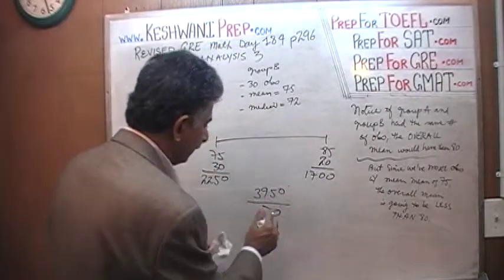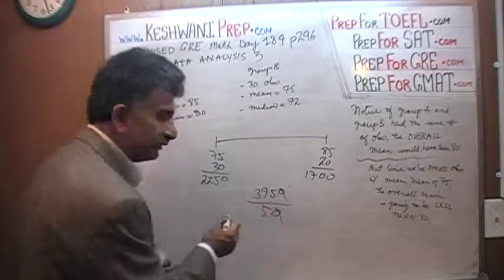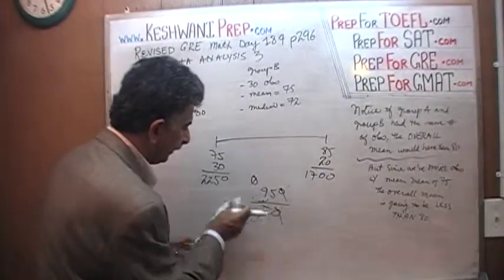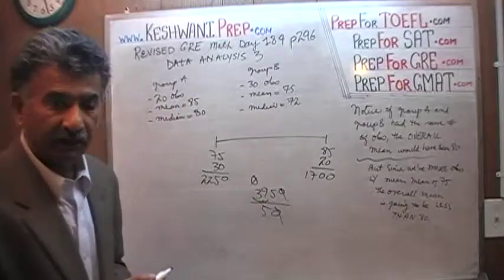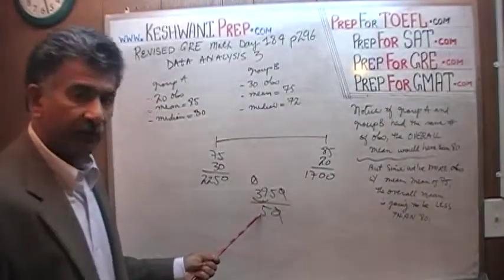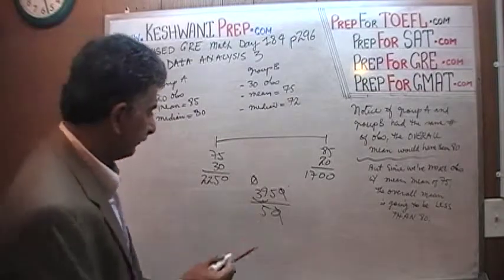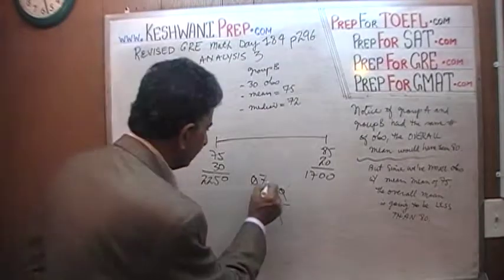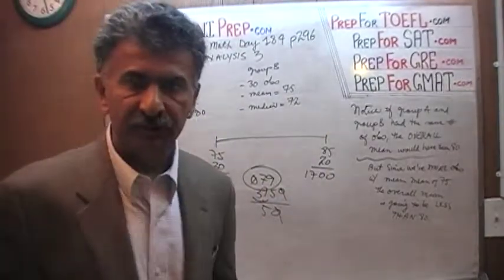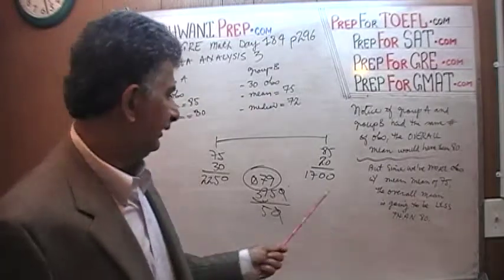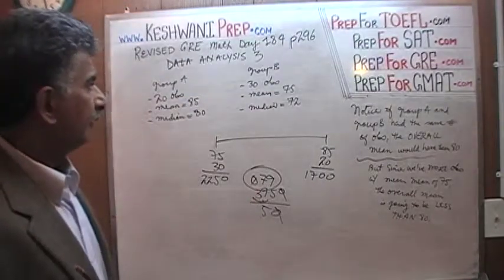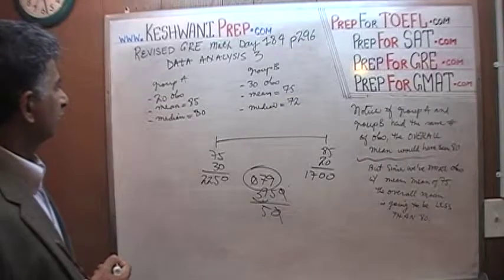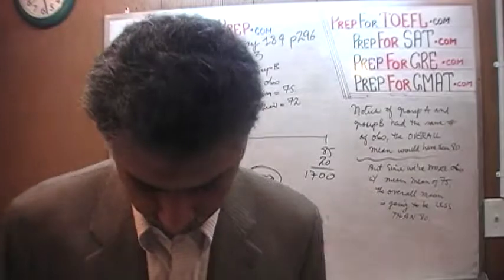Divide top and bottom by 10 — the zero drops out. Now divide the top by 5. How many 5s in 3? Zero — the 3 joins the 9, making 39. How many 5s in 39? Seven — 7 times 5 is 35, remainder 4. The 4 joins the next digit, making 45. How many 5s in 45? Nine. So the overall average, just as we anticipated, is less than 80. It turns out the overall average is 79.